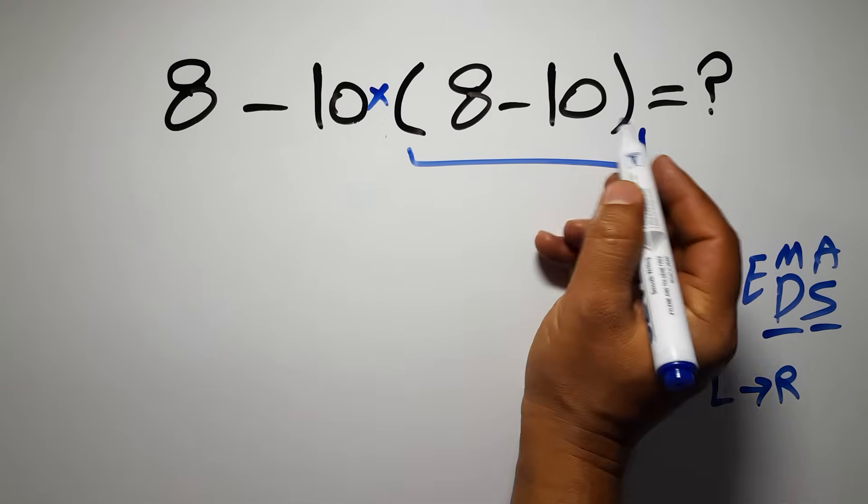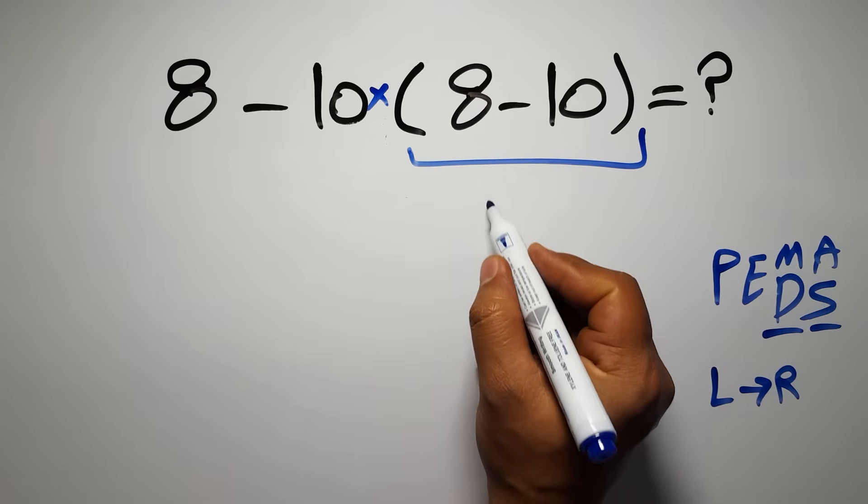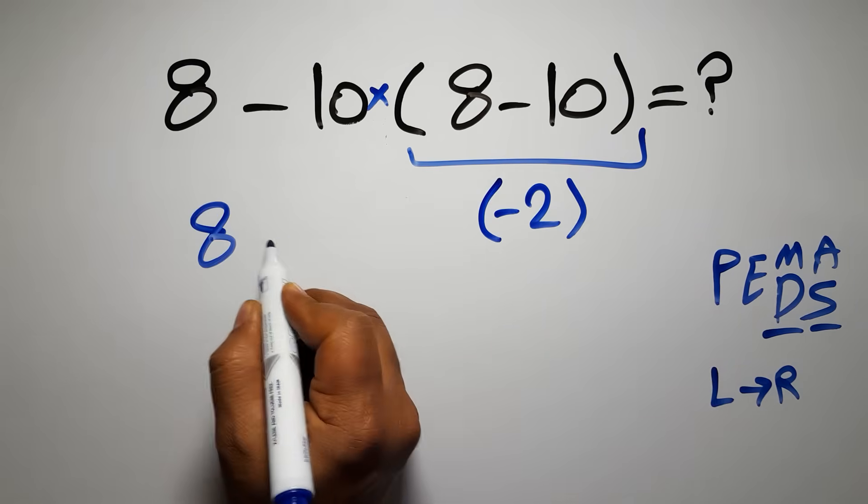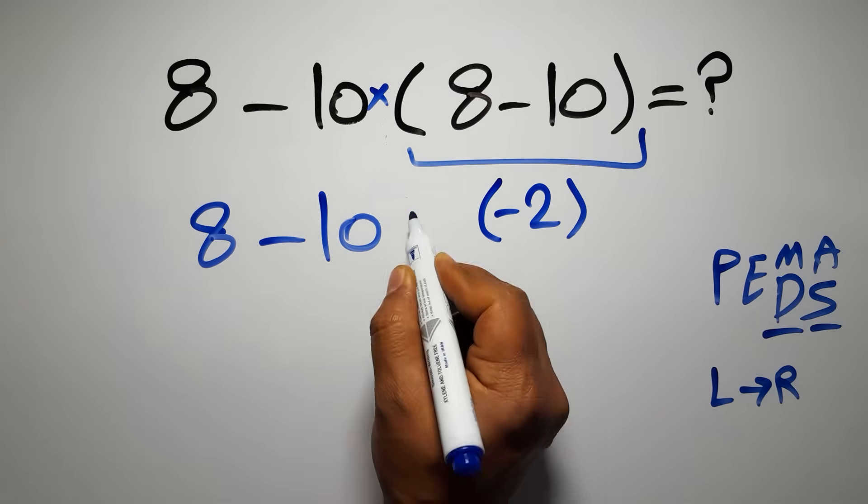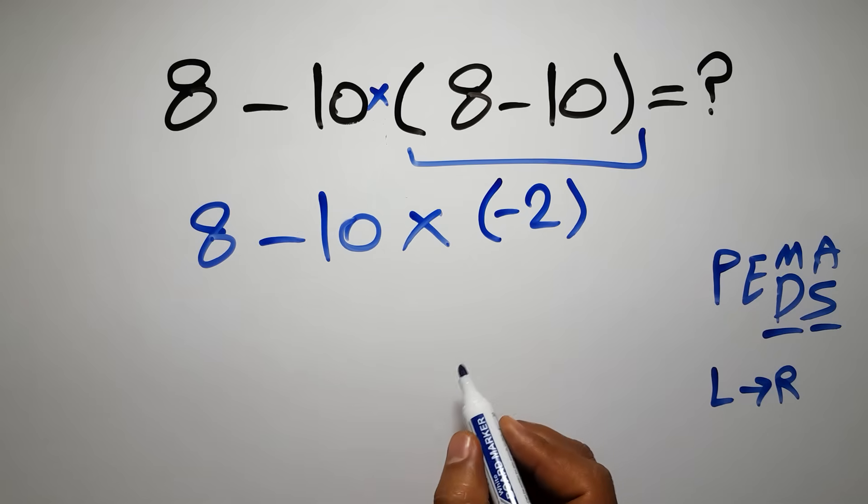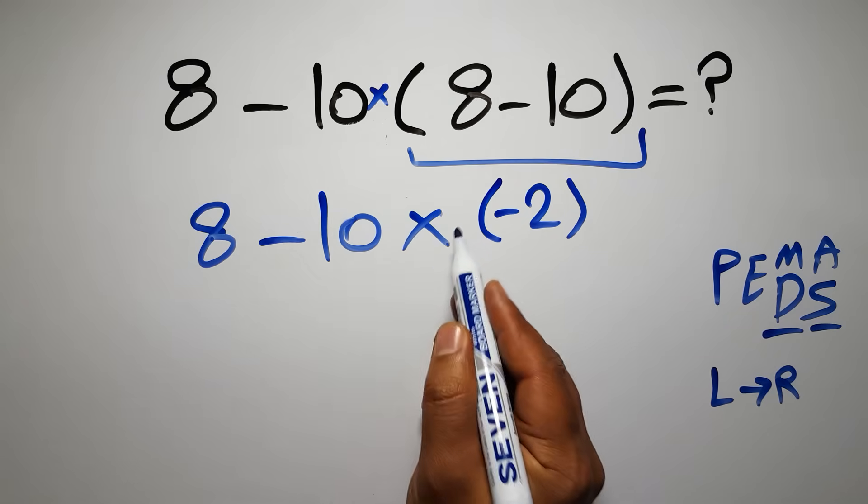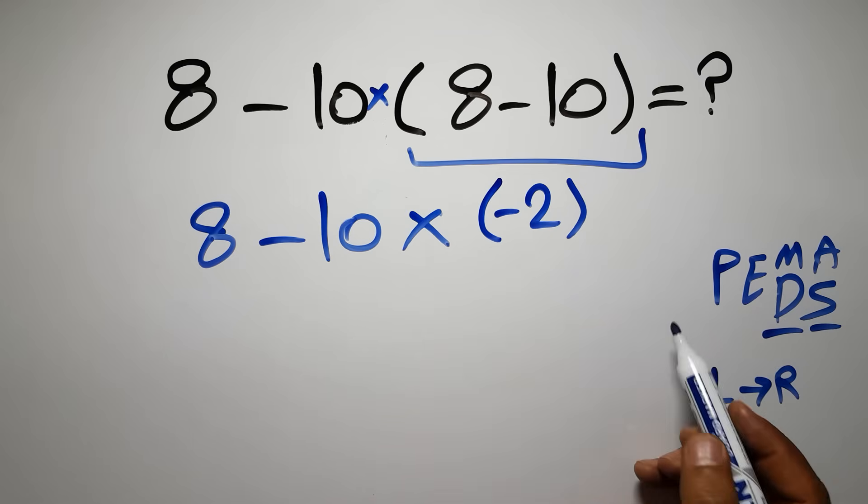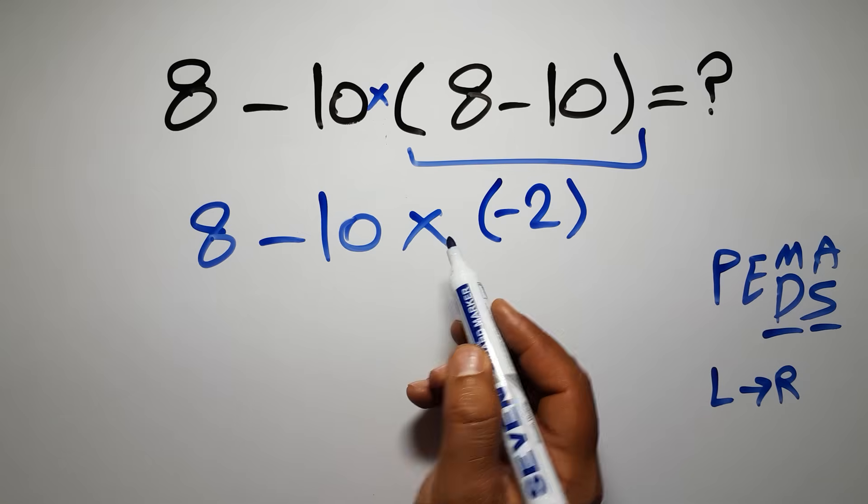So first this parentheses: 8 minus 10 gives us negative 2. So we have 8 minus 10 times negative 2. Now we have one subtraction and one multiplication. According to the order of operations, multiplication has higher priority than subtraction